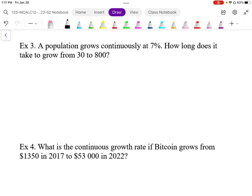So this problem here, the population grows continuously, so we know we're going to use the formula. It says, how long does it take to grow from 30 to 800? So I'm going to set this up. My end amount of 800 is equal to the starting amount of 30 times E. Our continuous growth rate is 7%, and we need to solve for time.